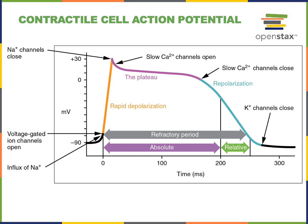During the plateau phase, we are in the absolute refractory period because voltage-gated sodium channels are inactivated. When the voltage-gated calcium channels close, repolarization begins — shown with the blue line — representing the falling phase of the action potential in contractile cells. This results from potassium flowing out through the voltage-gated potassium channels that remain open.